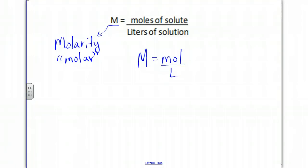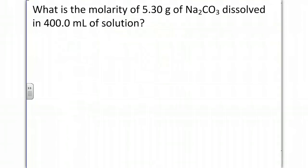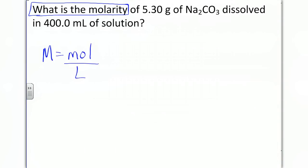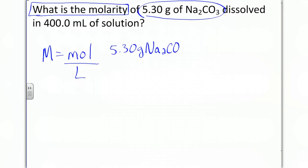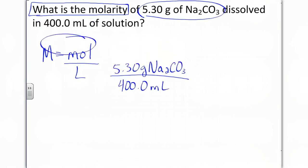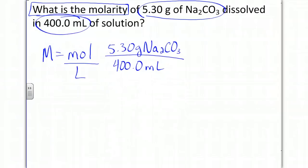Let's do a few calculations. In number one, it asks what is the molarity? When it asks for the molarity, we're going to take the mass they give us and put it over the volume. They don't give us moles, but they do give us 5.30 grams of sodium carbonate over the volume, which is 400.0 milliliters. We're going to convert it to moles over liter.